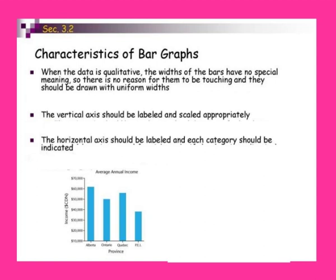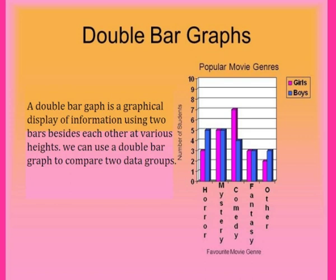Characteristics of a bar graph: when the data is qualitative, the widths of the bars have no special meaning, so there is no reason for them to be touching and they should be drawn with uniform widths. In a bar graph each bar should not touch each other and there should be equal space between every bar. The vertical axis (y-axis) should be labeled and scaled appropriately, and the horizontal axis (x-axis) should also be labeled with each category indicated.